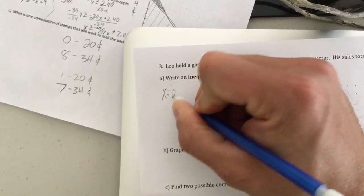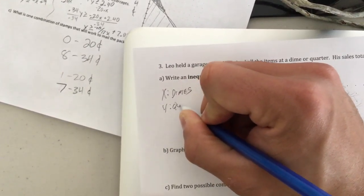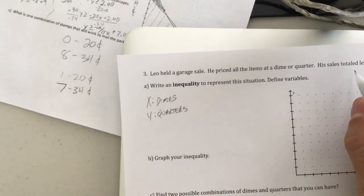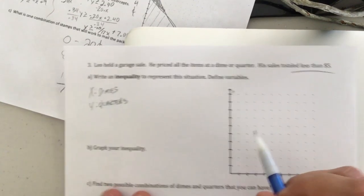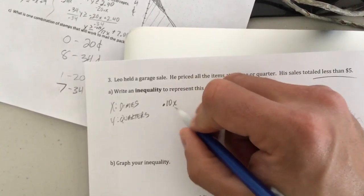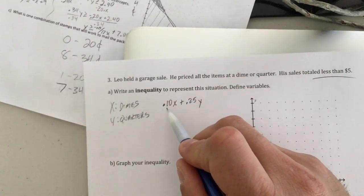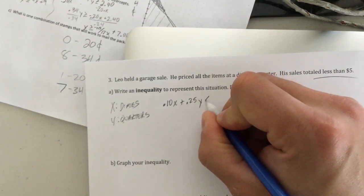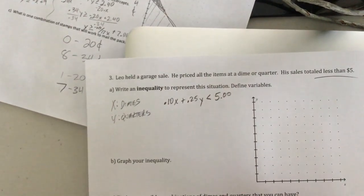So I'm going to call X dimes and Y quarters. And he totaled less than $5. Notice strictly less than. So that's going to come into play. So I'm going to do 0.10X plus 0.25Y. Now you might say, Mr., why are you doing that? A dime is 10 cents. A quarter is 25 cents. We're good to go there. And then this is all less than $5.